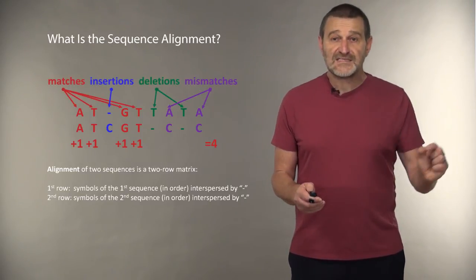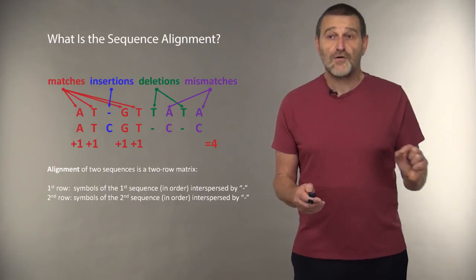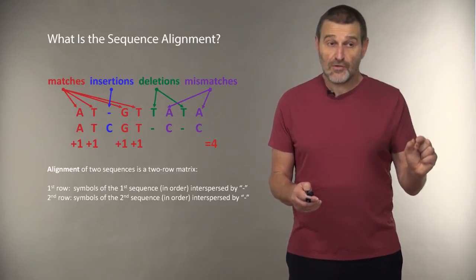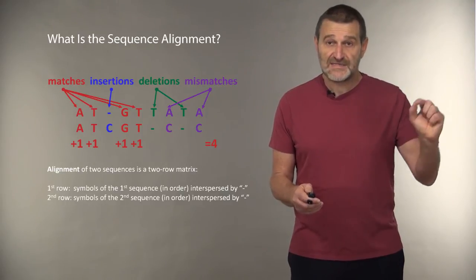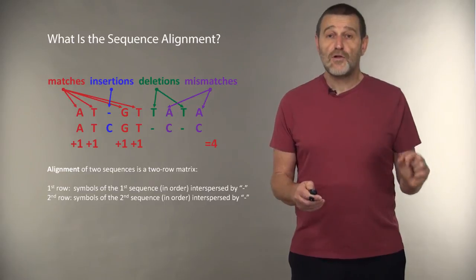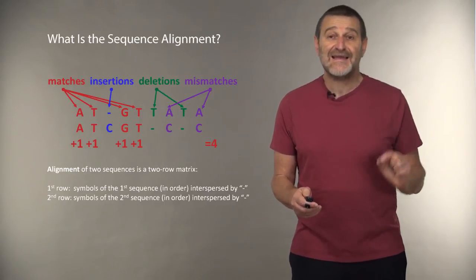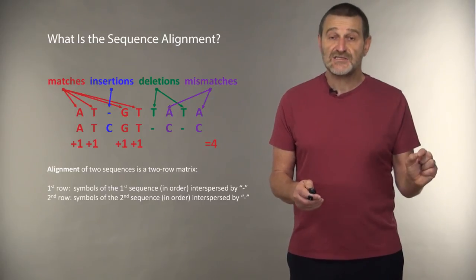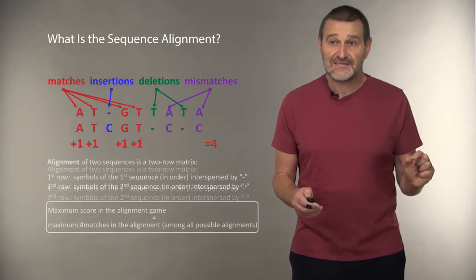We further classify different columns of the alignment matrix as matches—these are the columns for which we get score one with identical letters—or mismatches. This is a column where we have two letters, but they are different. And we also have insertions and deletions, sometimes collectively called indels.